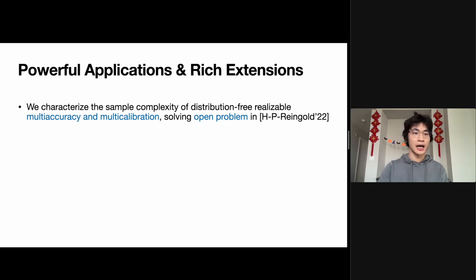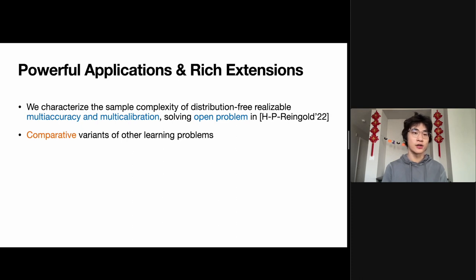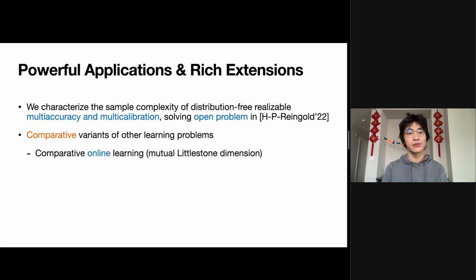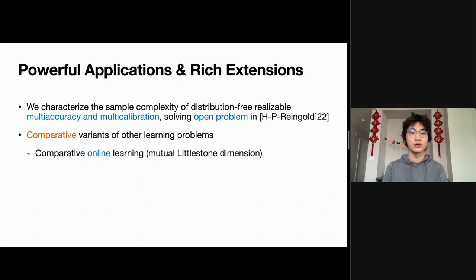More generally, we can take any learning task studied in the learning theory literature and ask the question of whether there is a comparative variant for that learning task. For example, for online learning, people have also studied a realizable setting and an agnostic setting. A famous result is that in both settings, we can characterize the optimal regret using the Littlestone dimension. In this paper, we study online learning in our comparative setting, and we show that the optimal regret can be characterized using a mutual Littlestone dimension, which is a complexity measure we define for pairs of hypothesis classes.